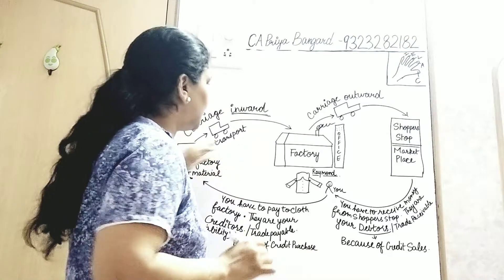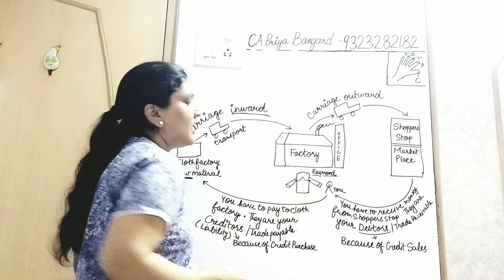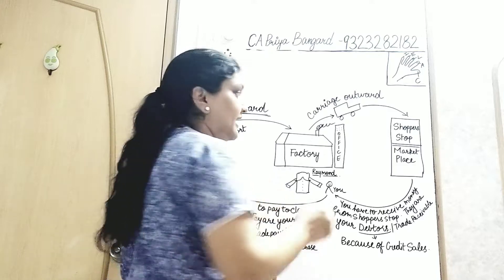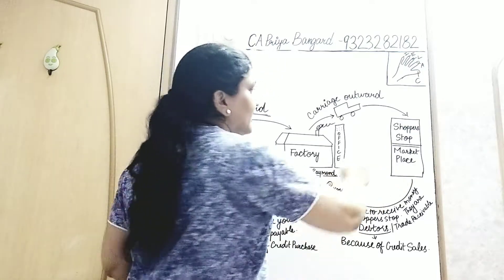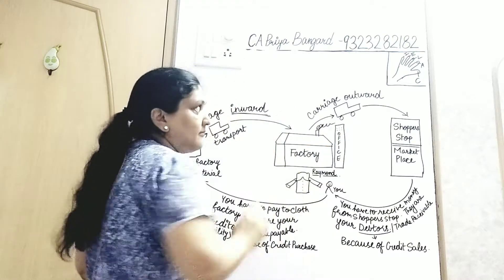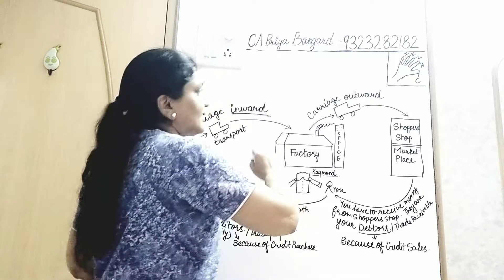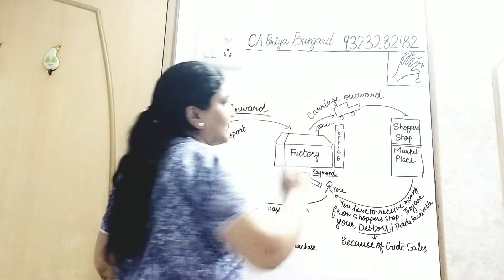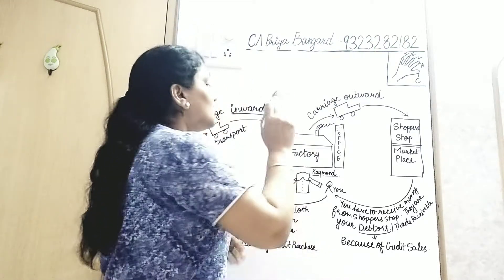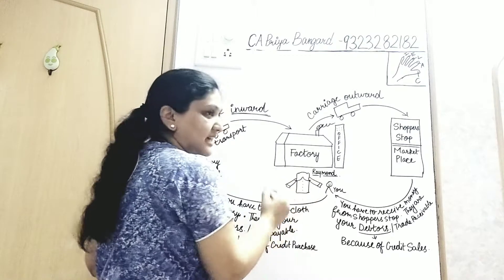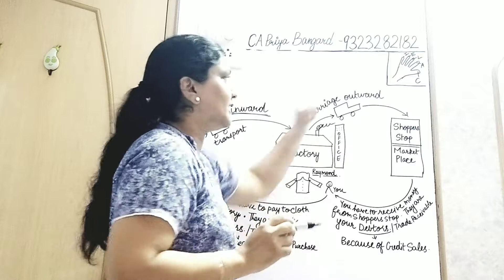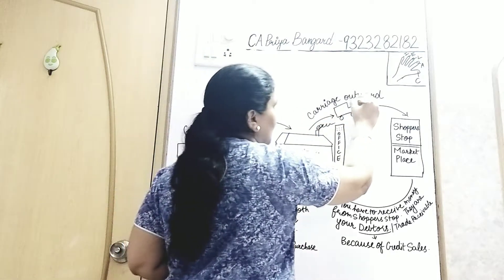Now you will process the cloth, turn it into a shirt, and then you will sell it to some market. This is the marketplace. For example, say it is Shopper's Stop. Again, you will load the shirts in some transportation means and then take it to the marketplace. These transportation costs which you incur to take your finished products, that is your shirt, to the marketplace, is known as carriage outward.